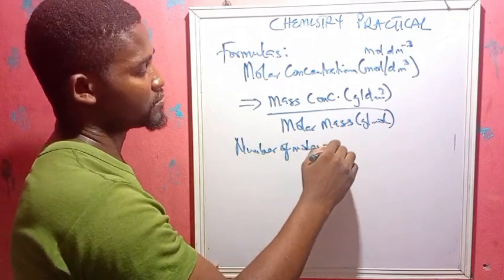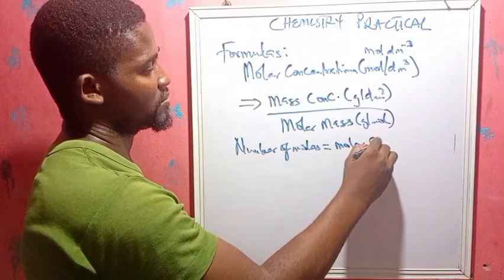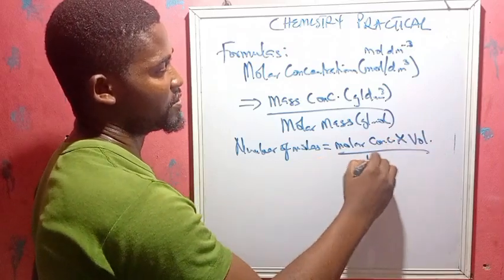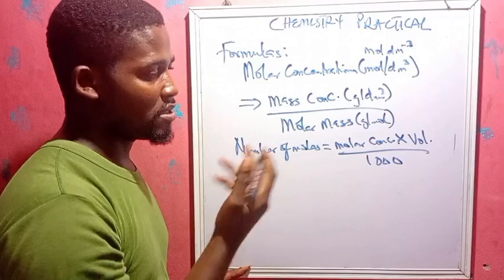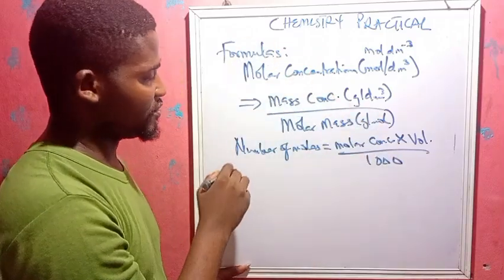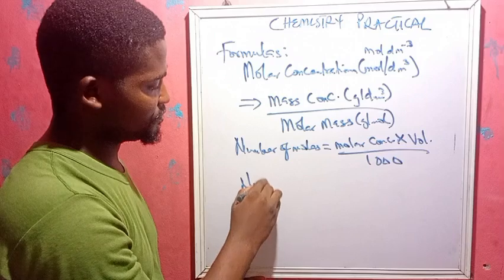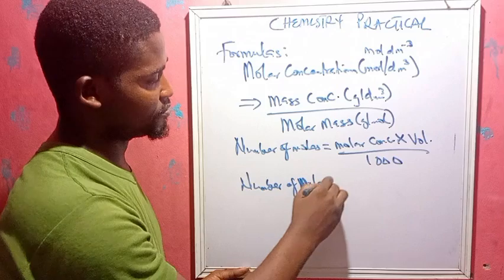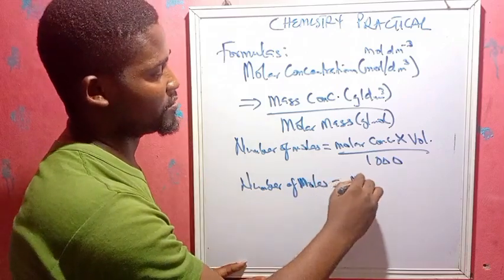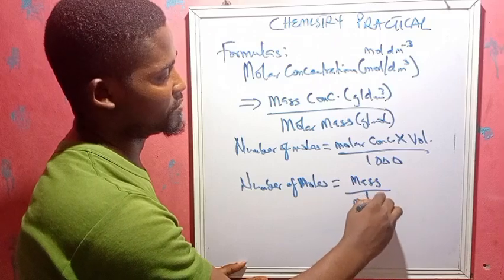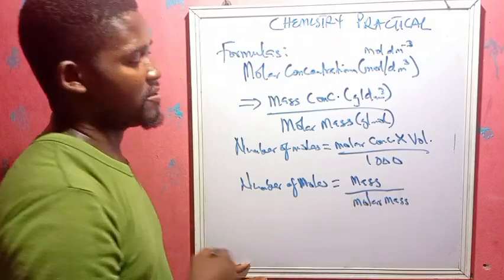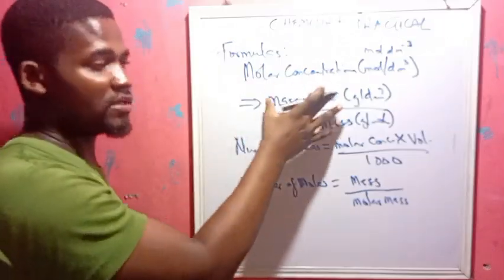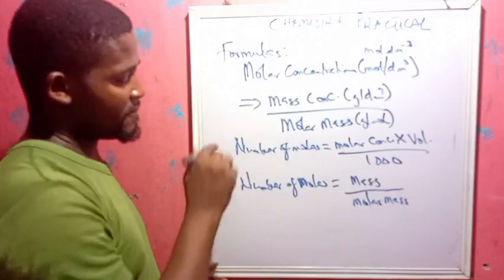The second formula: number of moles equals molar concentration times volume, divided by 1000 — using the molar concentration and volume of the acid or base respectively. You also have: number of moles equals mass divided by molar mass. These are the key formulas for calculating moles.